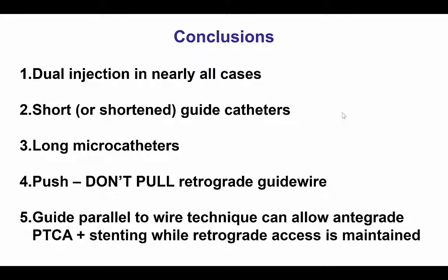Number one: dual injection should be used in essentially all cases unless there are absolutely no contralateral collaterals. Short guide catheters should be used for the retrograde approach, as well as long microcatheters. The retrograde guidewires should not be pulled but instead should be pushed. And if we do all that, we would not need to create new techniques like the guide-parallel-to-wire, because the cases can be completed much more quickly as well as safely.